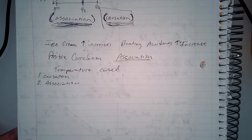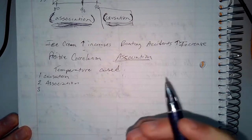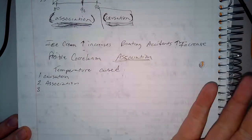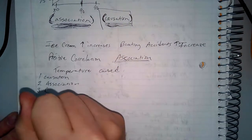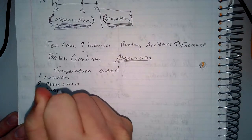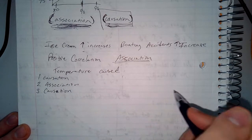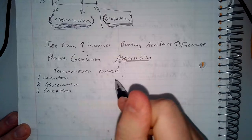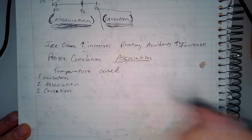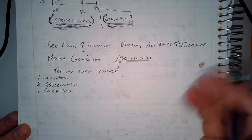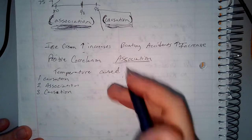Number three: exercising increases the amount of calories burned per minute. That one's directly caused. The more you exercise, the more calories you burn — definitely direct causation. One causes the other to happen. The more I exercise, the more calories I burn. Not like the cell phone/school bus example. Exercising causes the burning of calories.